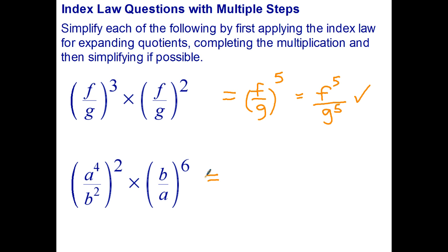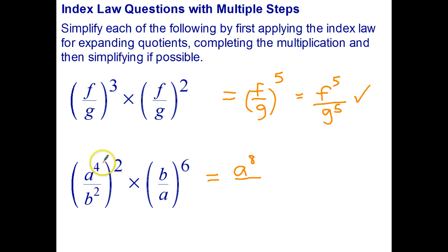Okay, try this one — it's similar but a little bit harder. Have a go and then restart the video. Let's see how you went. The first thing I'm going to do is simplify by raising a power to a power. These bases aren't the same so I can't multiply them. So this becomes A to the power of eight over — that's four times two using index law number three — and B to the power of four. I rewrite that as a fraction using index law four, then raise each to the power of two.